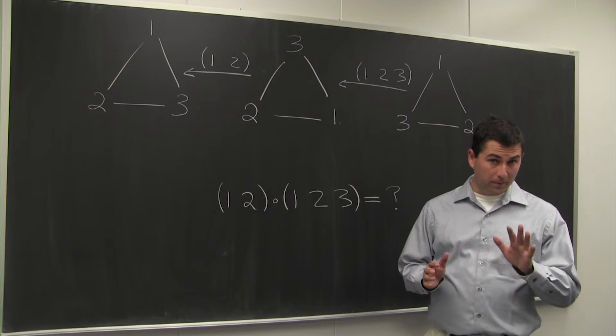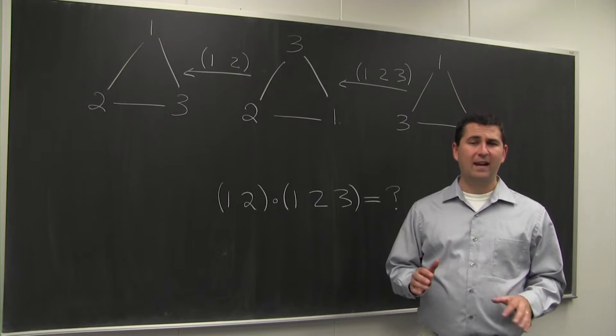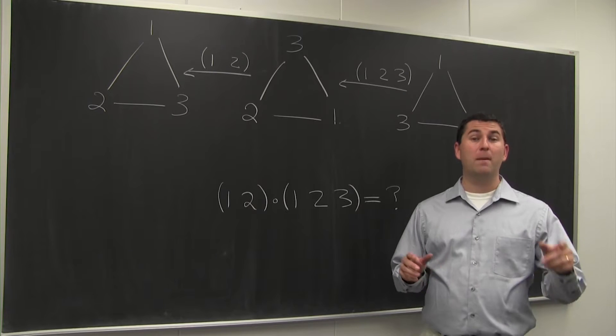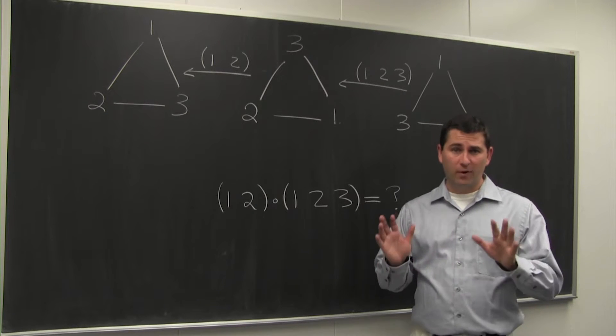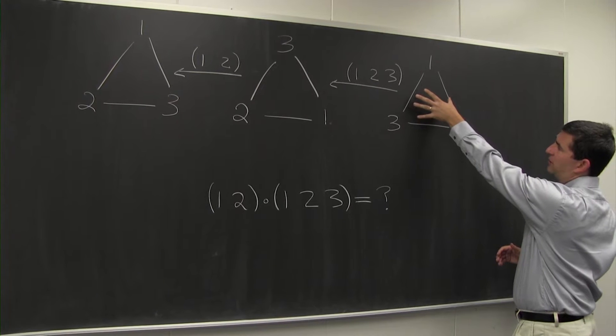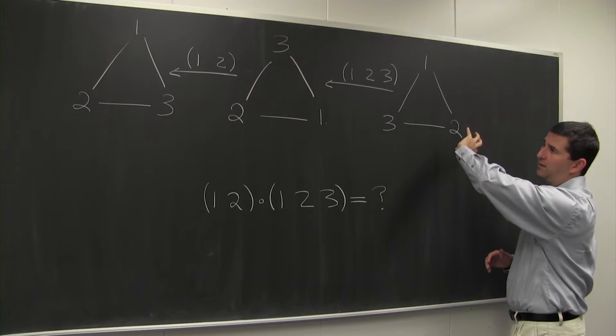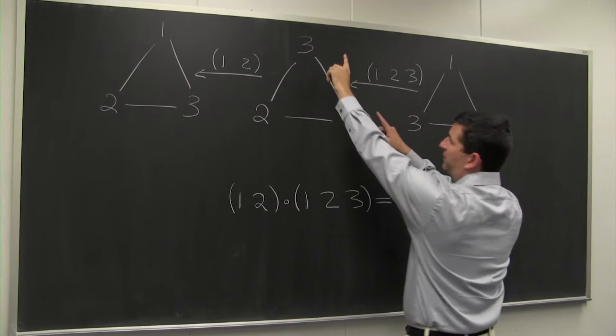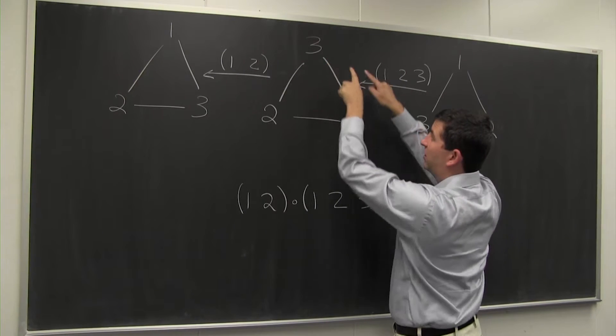The cycle notation for permutations in the symmetric group can get very difficult when we start composing permutations. For example, if we first take this triangular lattice of numbers and rotate it clockwise, and then take the first and second original positions and swap them,